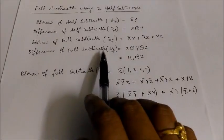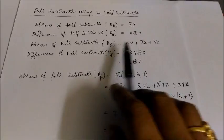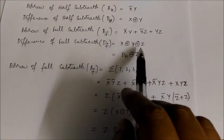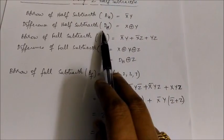Borrow of full subtractor is considered as x bar y plus x bar z plus y z. Difference of full subtractor is given as x XOR y XOR z. Now here we are representing x XOR y as dh.